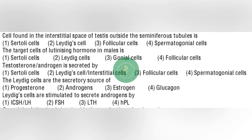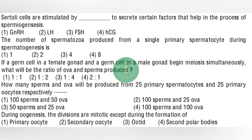Next question: the Leydig cells are the secretory source of — option number 2: androgens. Next question: the Leydig cells are stimulated to secrete androgens by — option number 1: LH, that is luteinizing hormone. Next question: Sertoli cells are stimulated by FSH to secrete certain factors that help in the process of spermiogenesis — option number 3: FSH, follicle stimulating hormone. Next question: the number of spermatozoa produced from a single primary spermatocyte during spermatogenesis is — option number 3: 4.